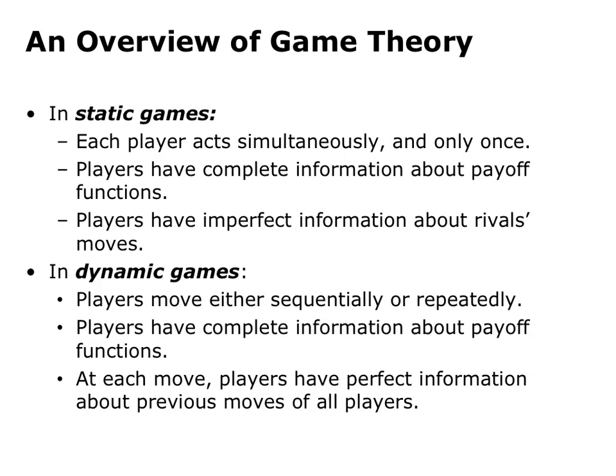In static games, each player acts simultaneously and only one time. Players have complete information about payoff functions, but imperfect information about rivals' moves. In dynamic games, on the other hand, players move either sequentially or repeatedly. They have complete information about payoff functions, and at each move they have perfect information about the previous moves of all players.